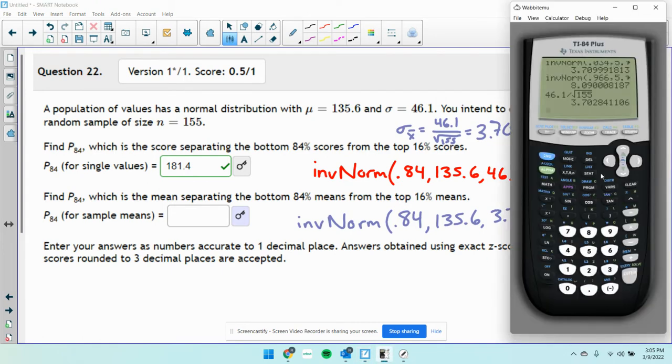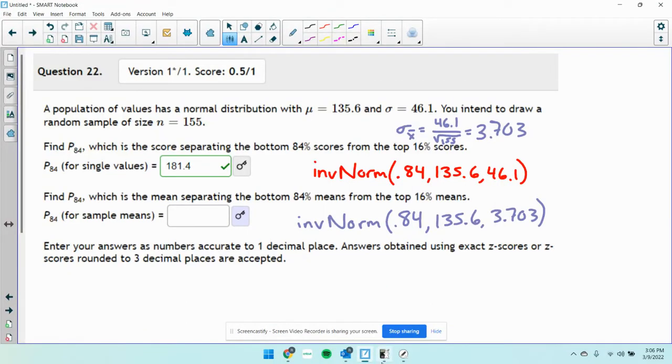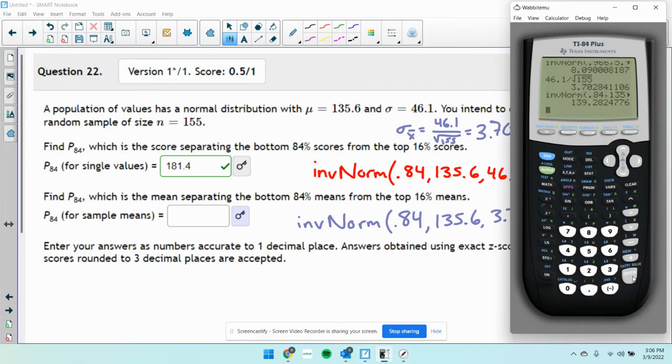So if we do that, inverse normal: 0.84, 135.6, 3.703. Is that what I said? Yeah. 139.28.